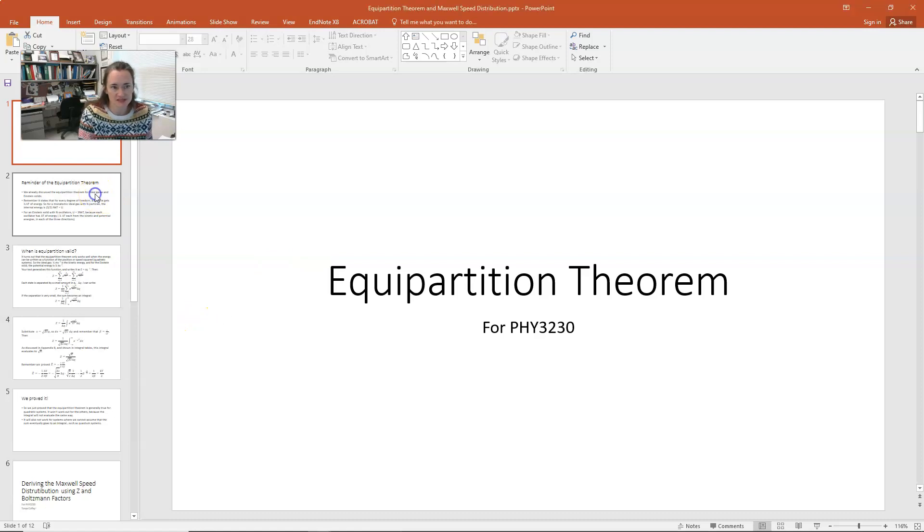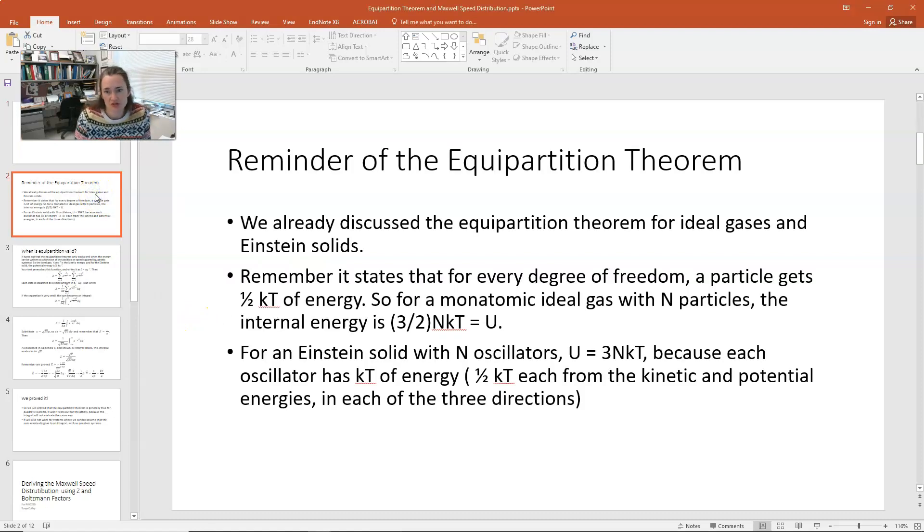Now, previously, we've been using the idea of equipartition of energy, and we've already discussed it. So this is the idea that for every degree of freedom that you have, a particle will get kt over 2 of energy. Here, k is Boltzmann's constant, t is the temperature in Kelvin, and of course the 2.